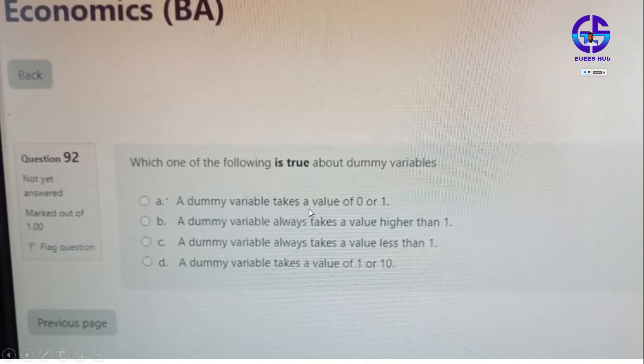Option A: a dummy variable takes a value of zero or one. Option B: a dummy variable always takes a value higher than one. Option C: a dummy variable always takes a value less than one. Option D: a dummy variable takes a value of one or ten.